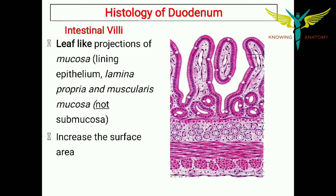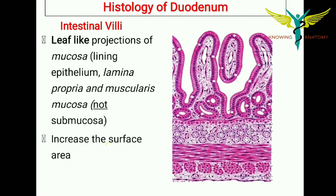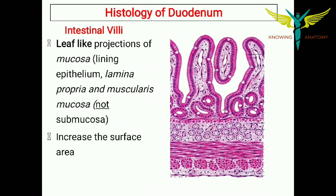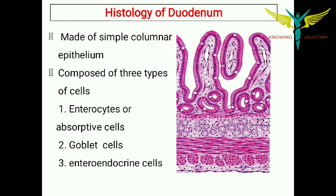Coming to the intestinal villi, these villi are leaf-like projections of the mucosa. They line the epithelium, lamina propria, and the muscularis mucosa. These intestinal villi also help to increase the surface area.